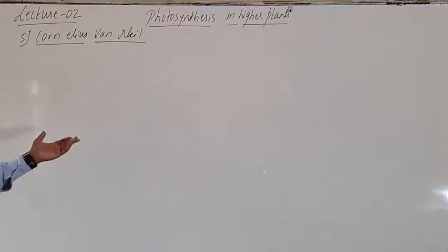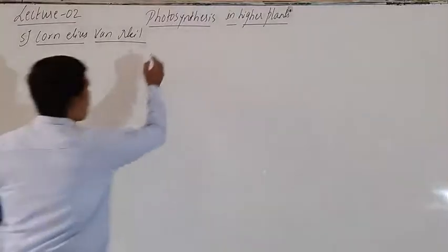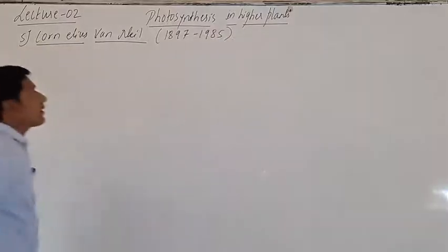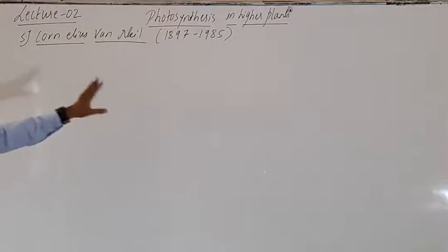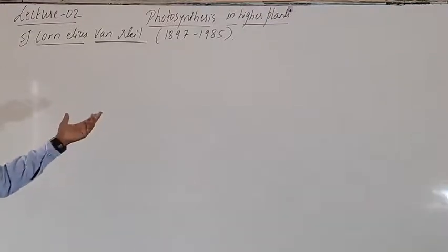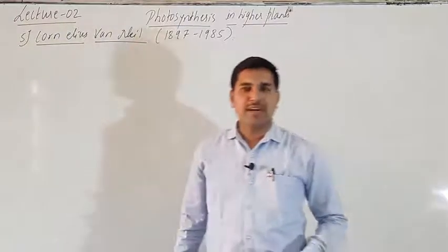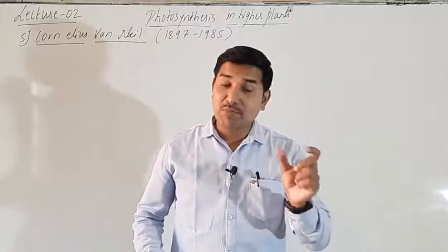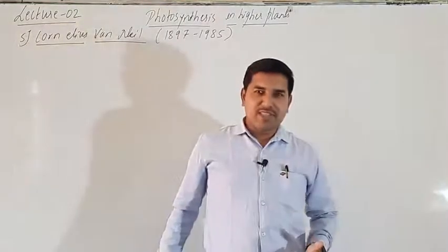Cornelis van Neel was present between 1897 to 1985. He gave a milestone experiment to show that oxygen which is liberated during the process of photosynthesis comes from water, not from CO₂.